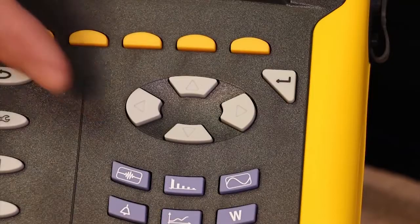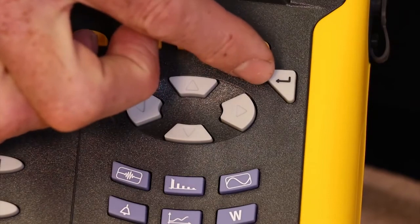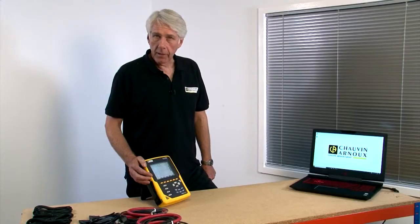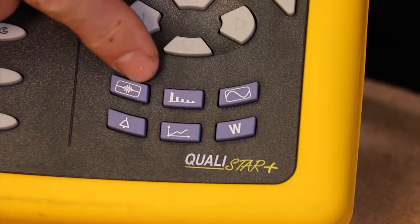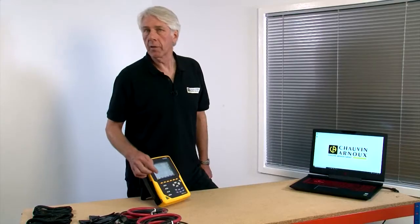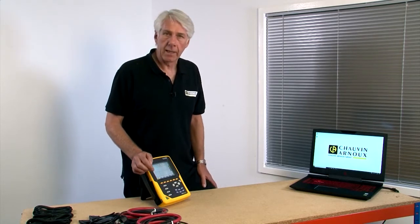And here we have the four standard cursor keys and an enter key. The usage of these six keys will become apparent as we move through the product, but essentially they take you from screen to screen, looking at watts, alarms, the waveform, the harmonics, etc.